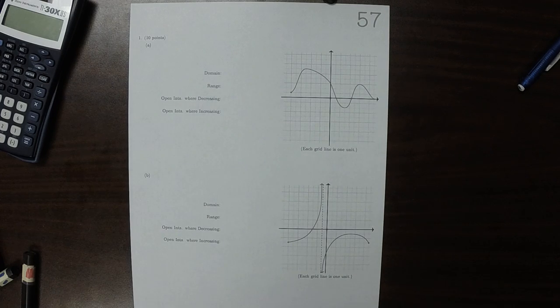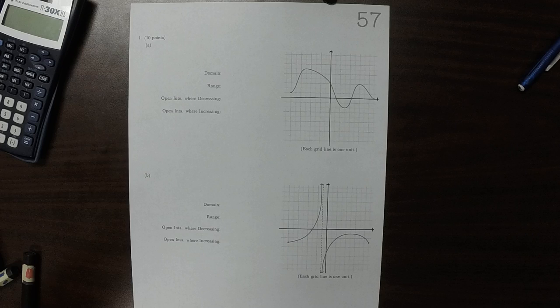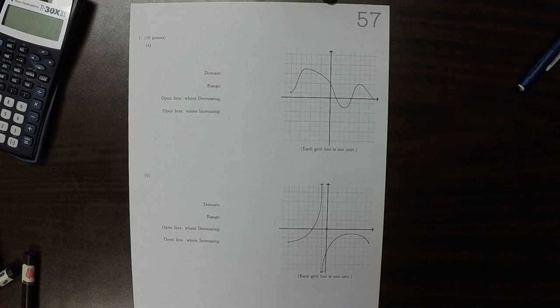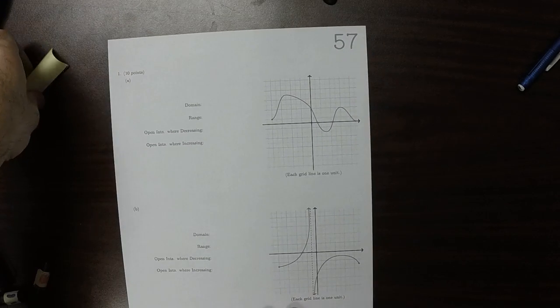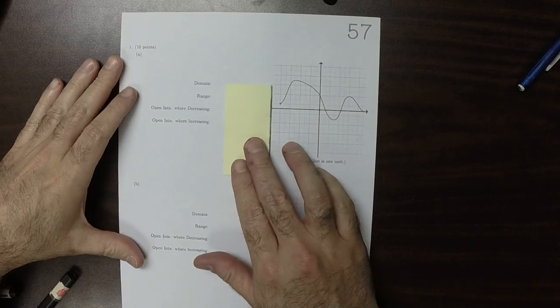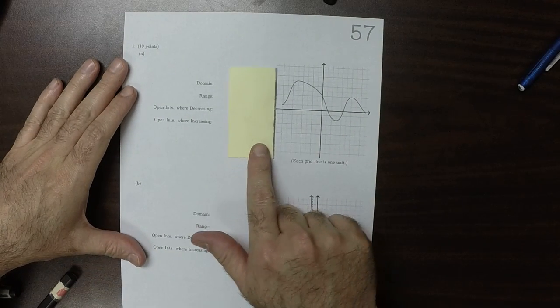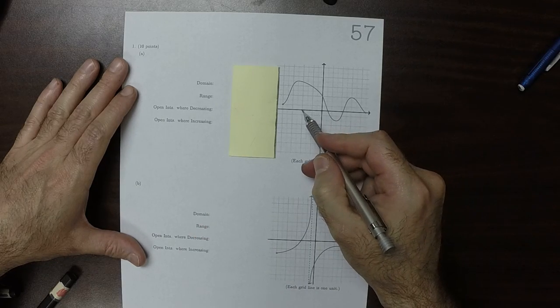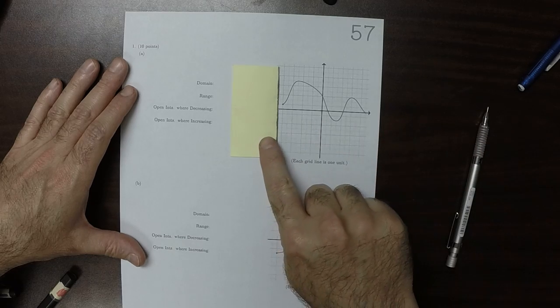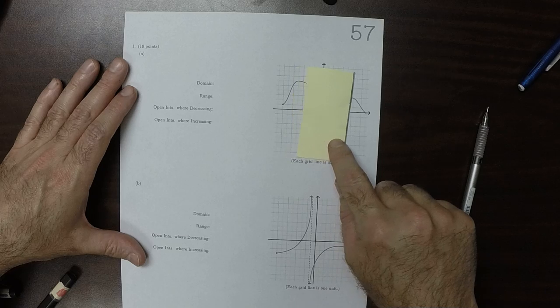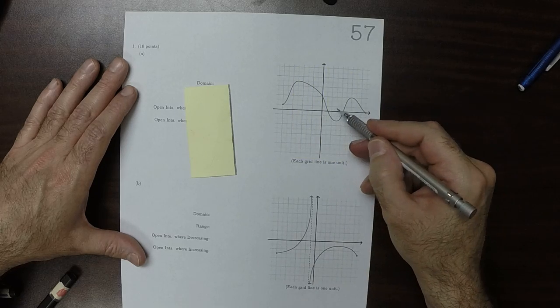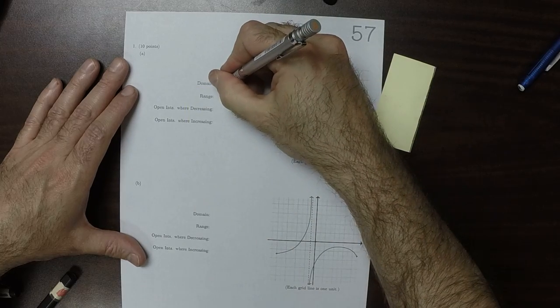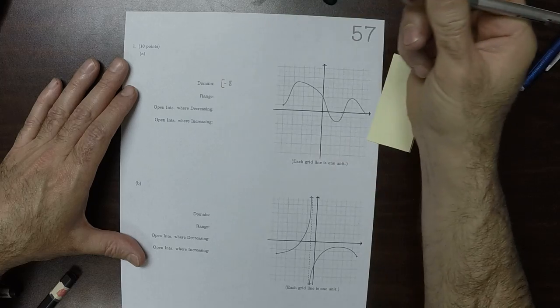This is the solution to Written Homework 57. So the domain of this plot, we can sweep this vertical line left to right, so that's all the way from 2, 4, 6, negative 8. So from negative 8 all the way up to that must be 9, 2, 4, 6, 8, 9. So from negative 8 to 9.